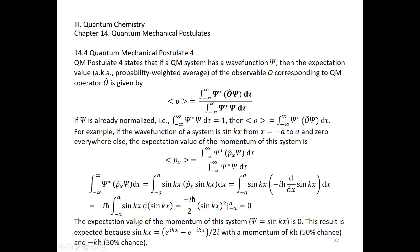So we're going to say the expectation value of the momentum of the system with wave function sin(kx) is simply zero. And we do expect this kind of result. It is zero because sin(kx) can be written as a linear combination of e to the power of ikx and e to the power of negative ikx. The former has a momentum of kh-bar. The latter has a momentum of negative kh-bar, and it's a 50-50 chance. So the expectation value is kh-bar times 50% plus negative kh-bar times 50%, which should be zero.